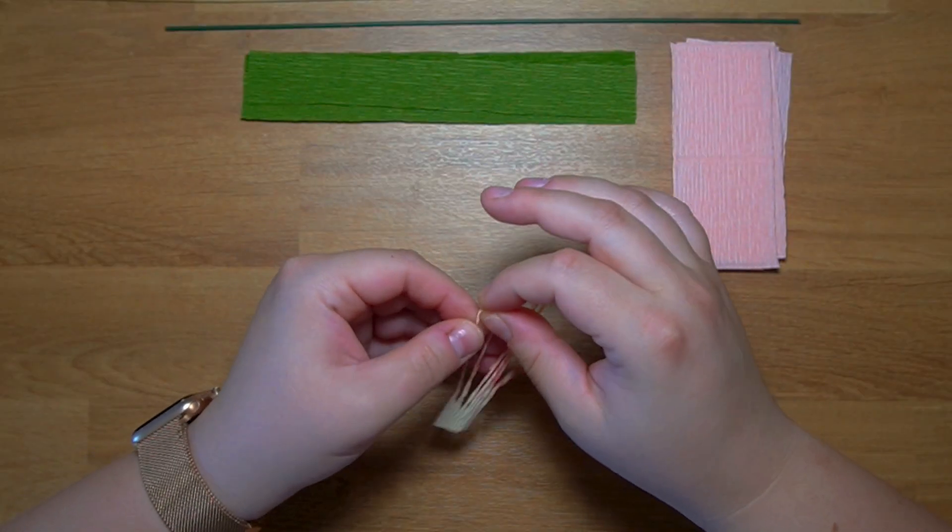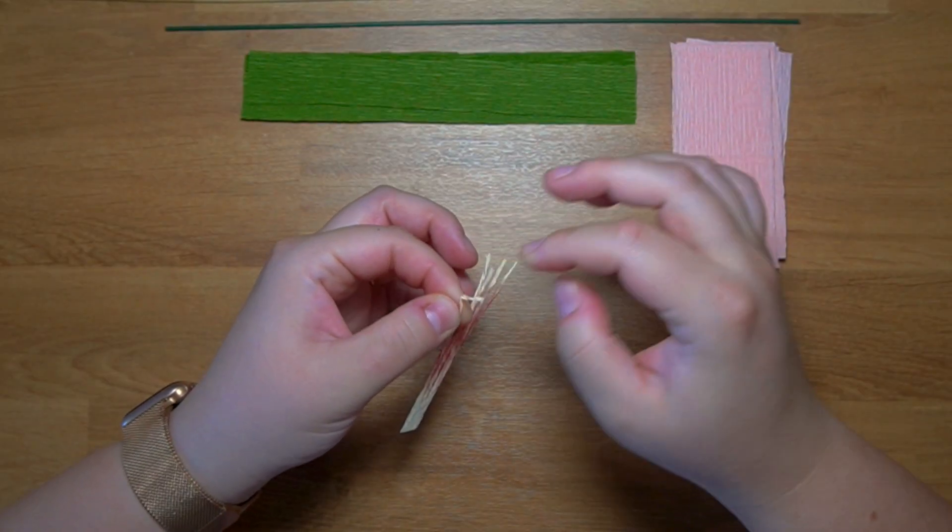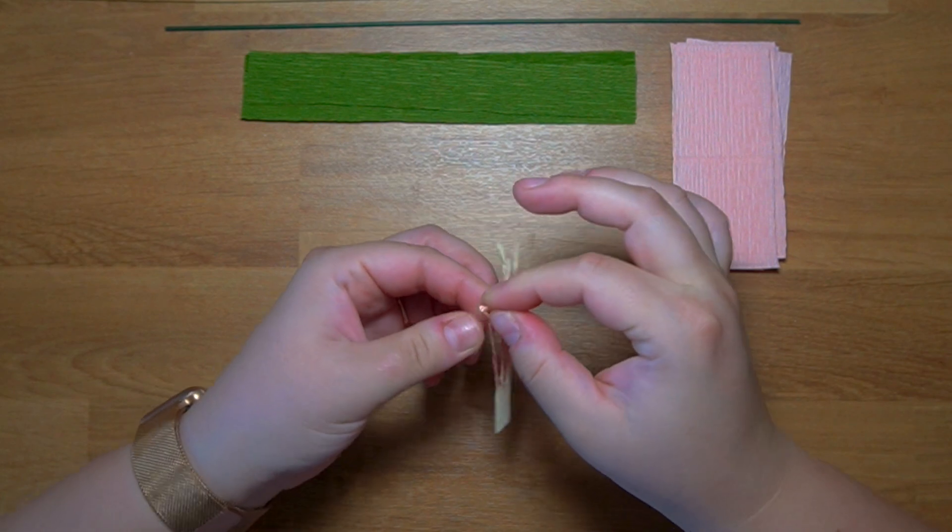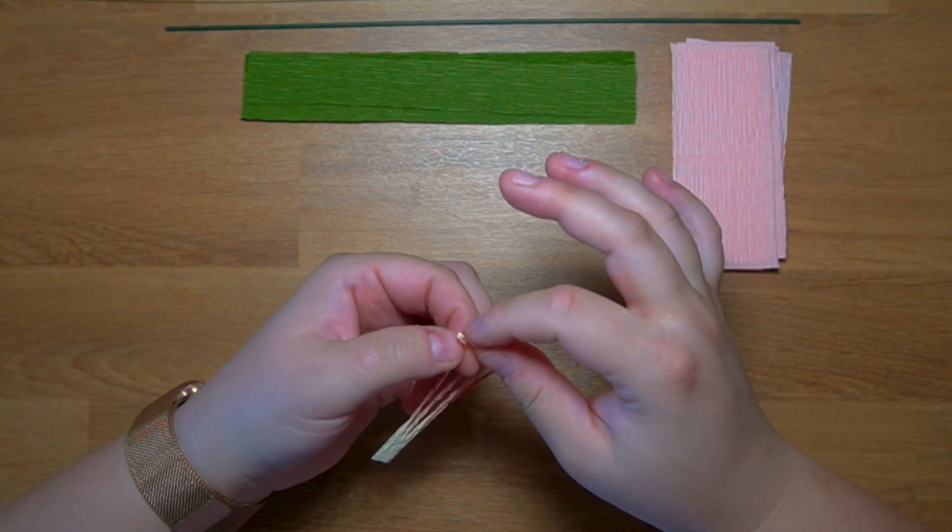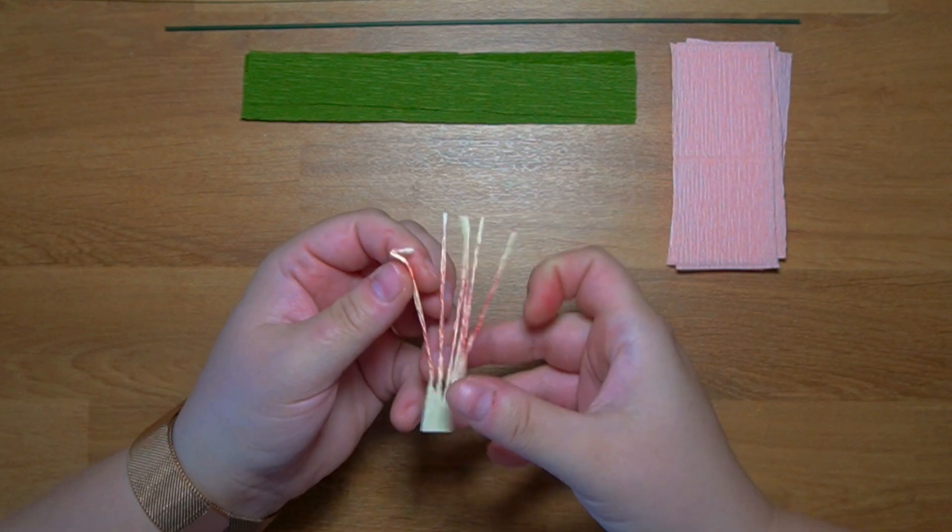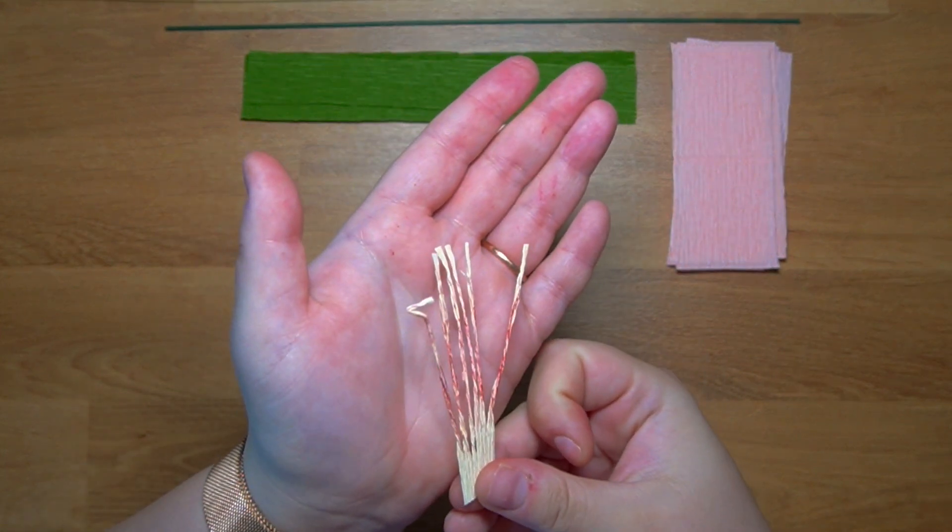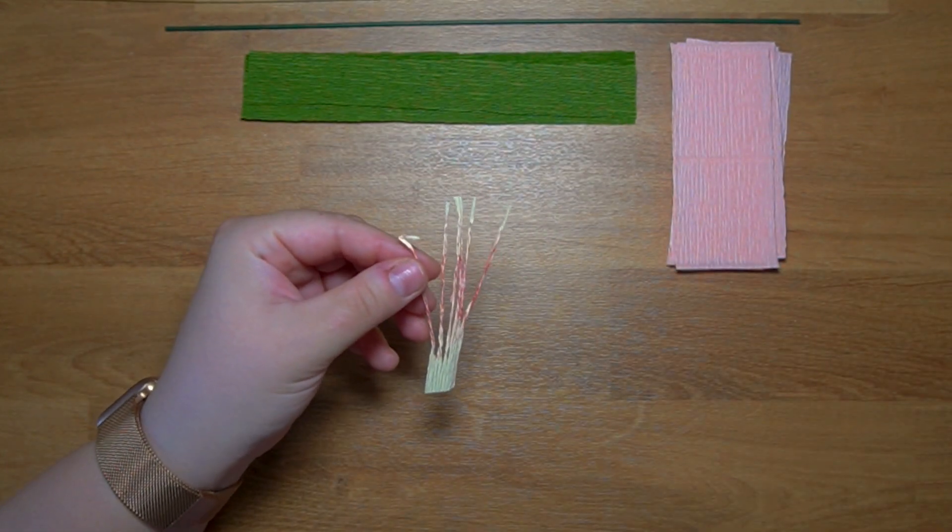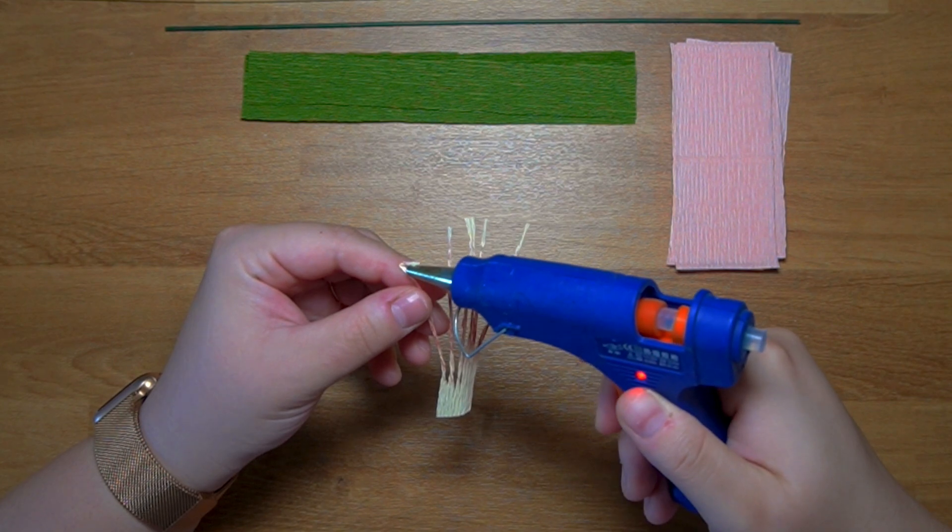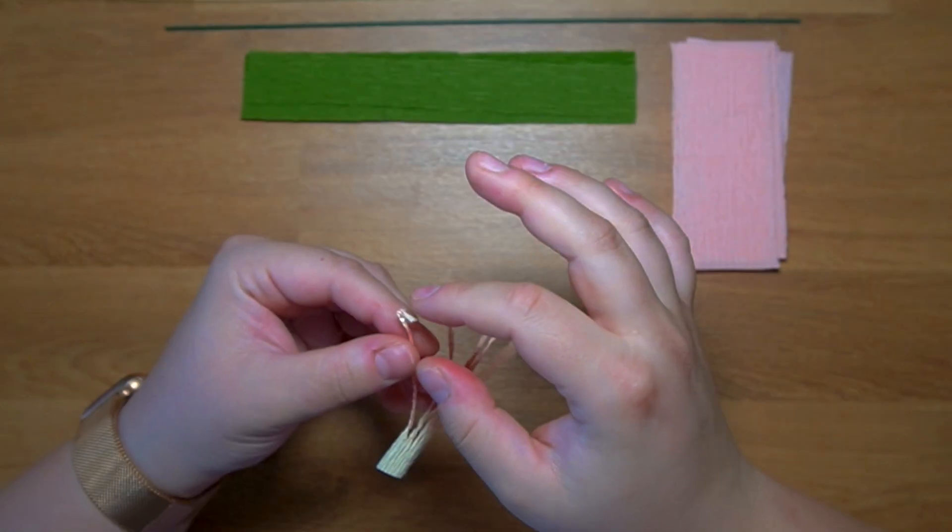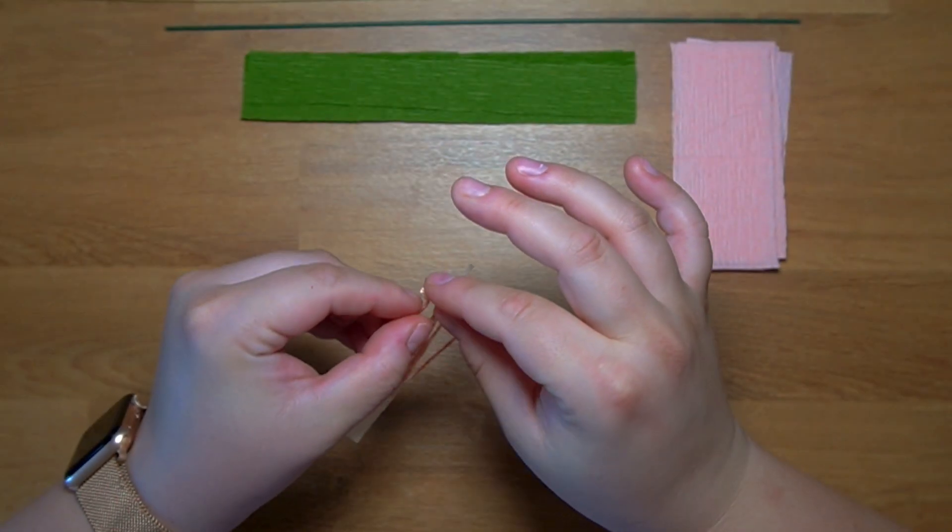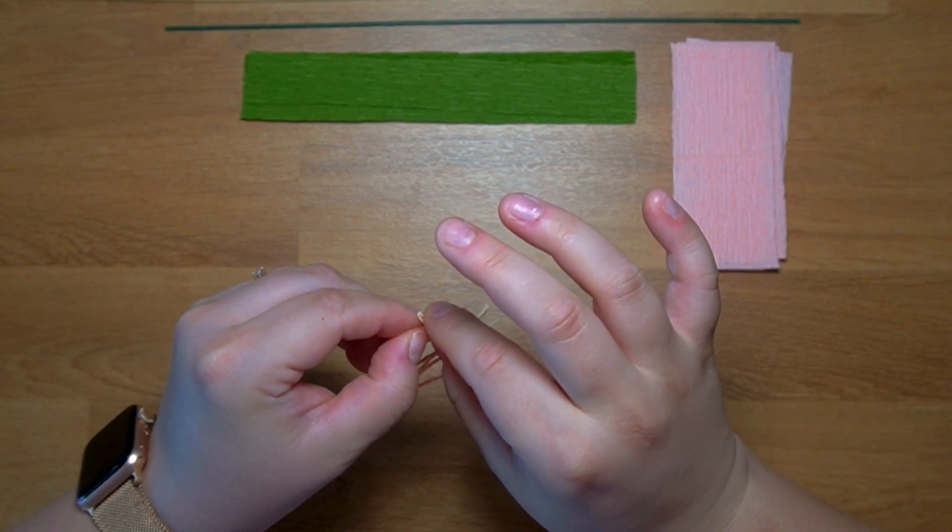And now for the part that looks tricky but it's not really is when we give the stamens that specific shape. I don't know what to call it, I would say a T-shape. I don't know the actual term for it but if you do leave it in the comments.